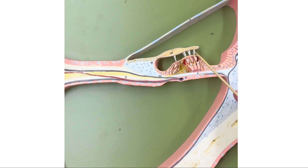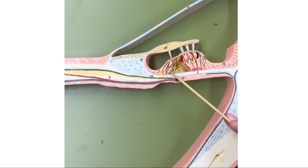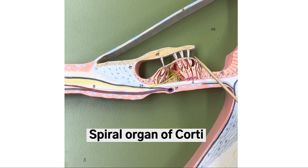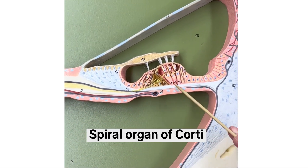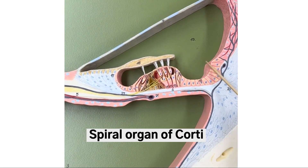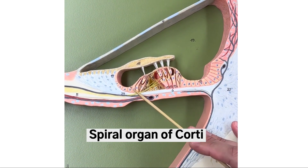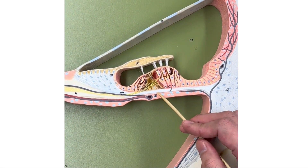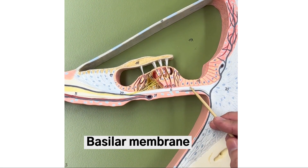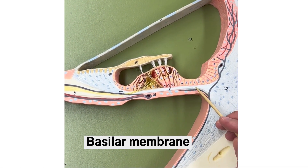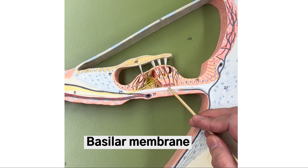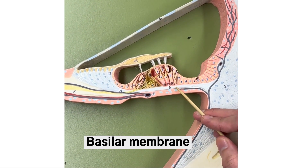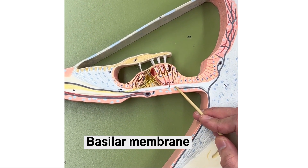Next here we have the spiral organ of Corti. And we notice it is resting on this membrane, the basilar membrane.